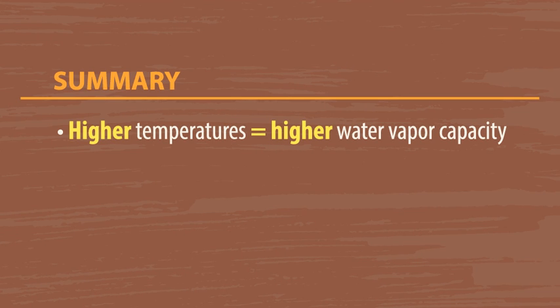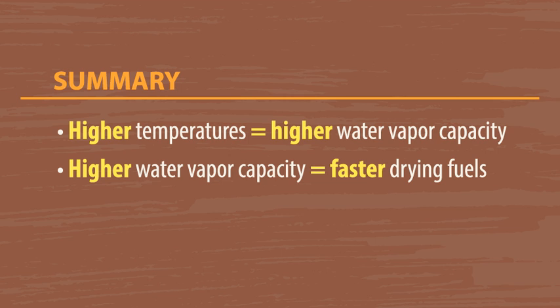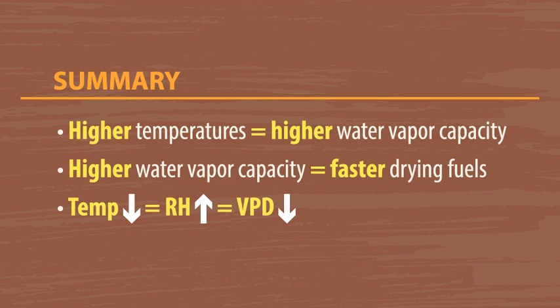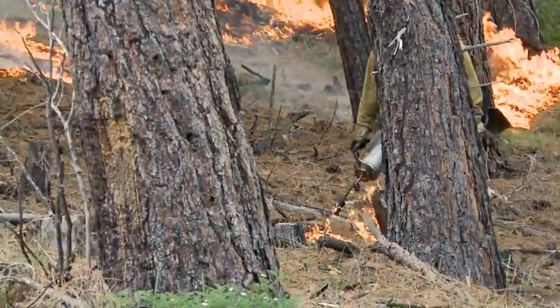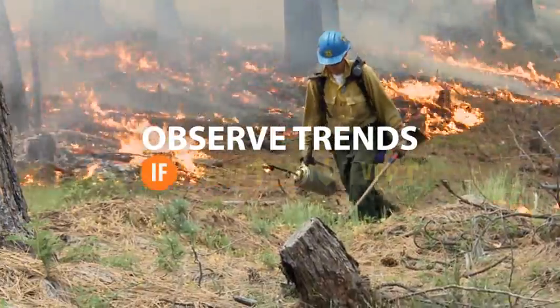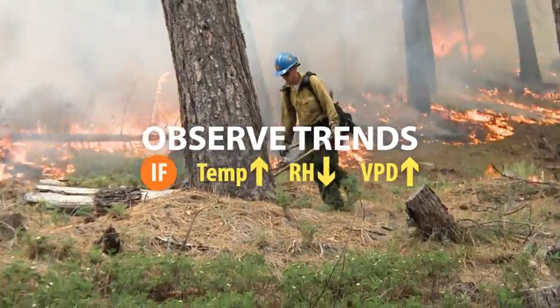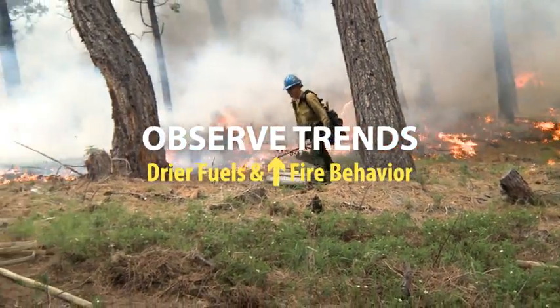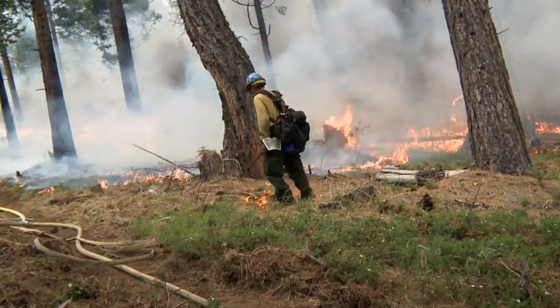To wrap up: the warmer the air temperature, the more water vapor the air can potentially hold. The bigger the difference between the moisture the air has and what it could have if it were saturated, the faster the fuels will dry and the sooner they'll be available to burn. As temperatures go down and approach the dewpoint temperature, the RH goes up and the VPD goes down, causing less moisture to be pulled from the fuel — some might even absorb back in — leading to a decrease in fire behavior. If you're working on a fire, a big takeaway is to observe the trends in fuel moisture and fire behavior. If today is forecasted to be hotter than yesterday with a lower RH and a higher VPD, then you can expect drier fuels and the potential for increased fire behavior.